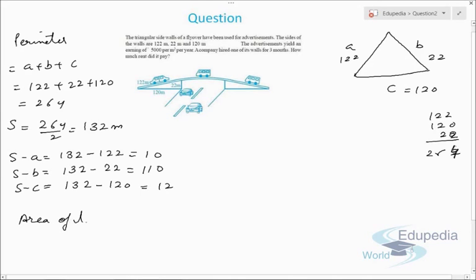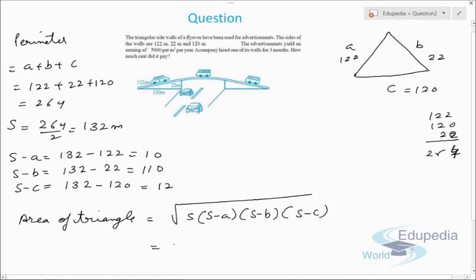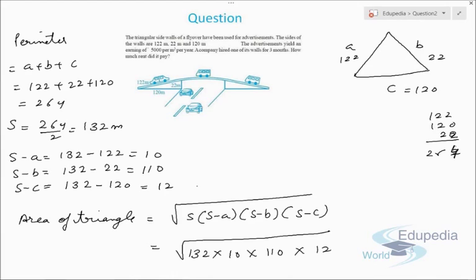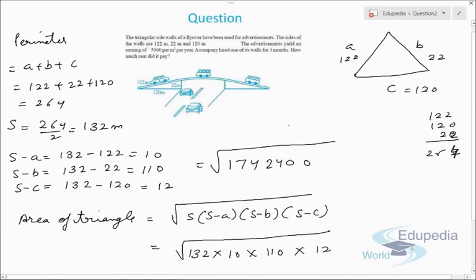Using Heron's formula: Area = √(s × (s−a) × (s−b) × (s−c)) = √(132 × 10 × 110 × 12). This equals √1,742,400, which comes out to be 1320 square meters. So the area of the triangular wall is 1320 m².